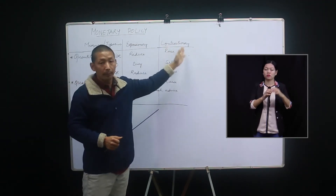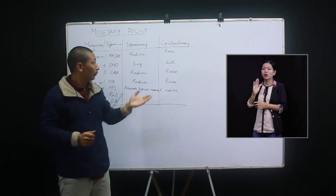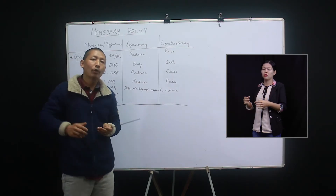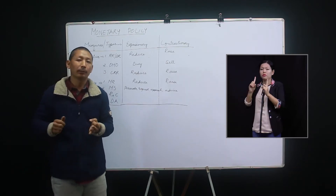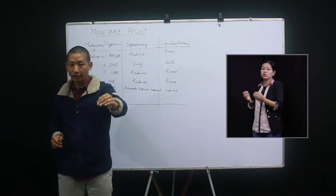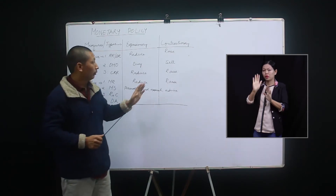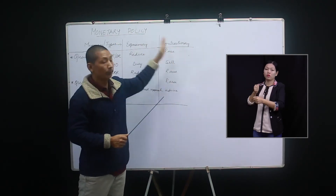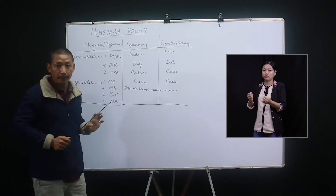Why contractionary monetary policy? In times of inflation, where the aggregate demand is very high, there is excess demand. For rich people, no matter how much the price rises, it's never a problem. But for fixed income earning people and middle income earning people, we are mostly affected, and it will have a far-reaching negative impact. Therefore, in times of inflation, when there is excess demand, the government will resort to contractionary monetary policy to tighten the situation and tighten the demand.